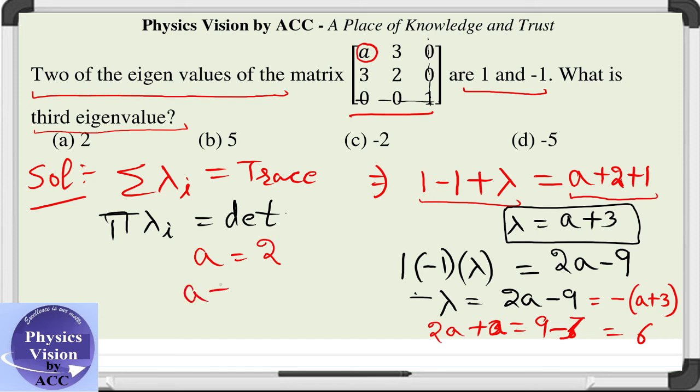And a plus 3 gives us 2 plus 3, that is 5, which is equal to lambda. So the third eigenvalue is 5. Hence option B is the correct answer to this question.